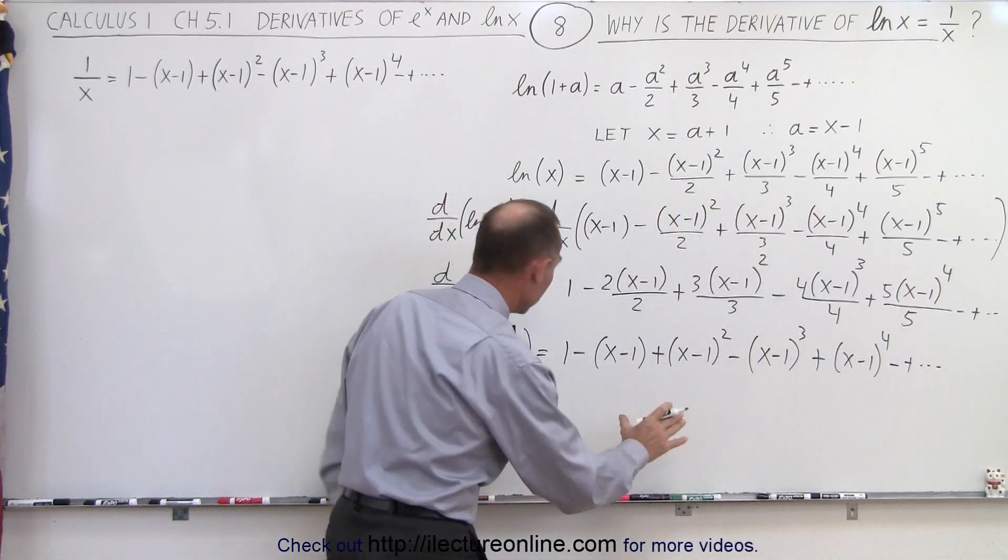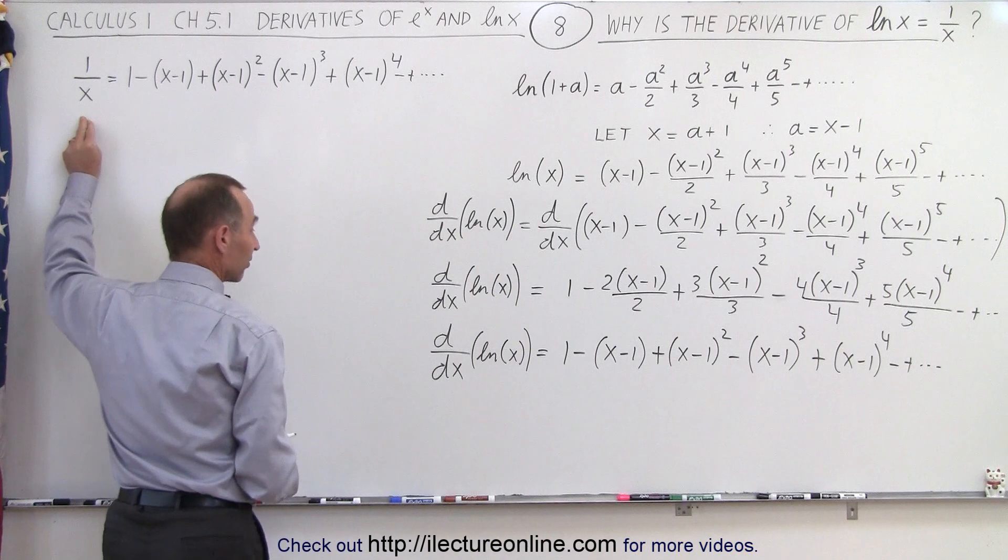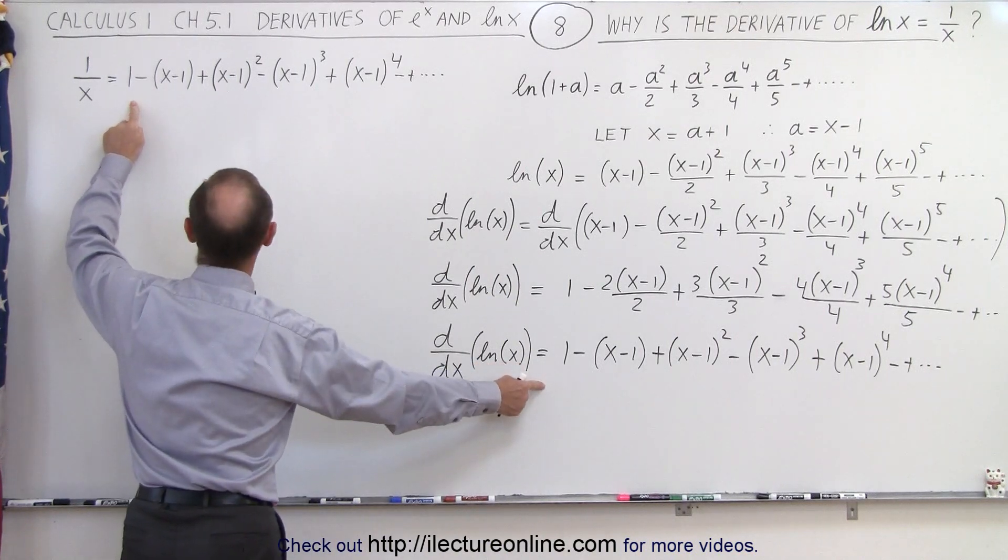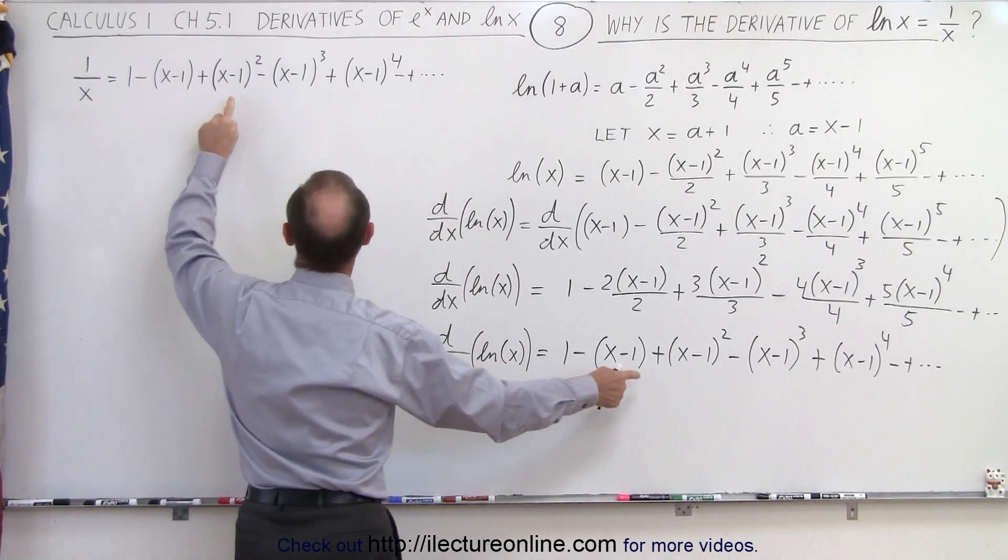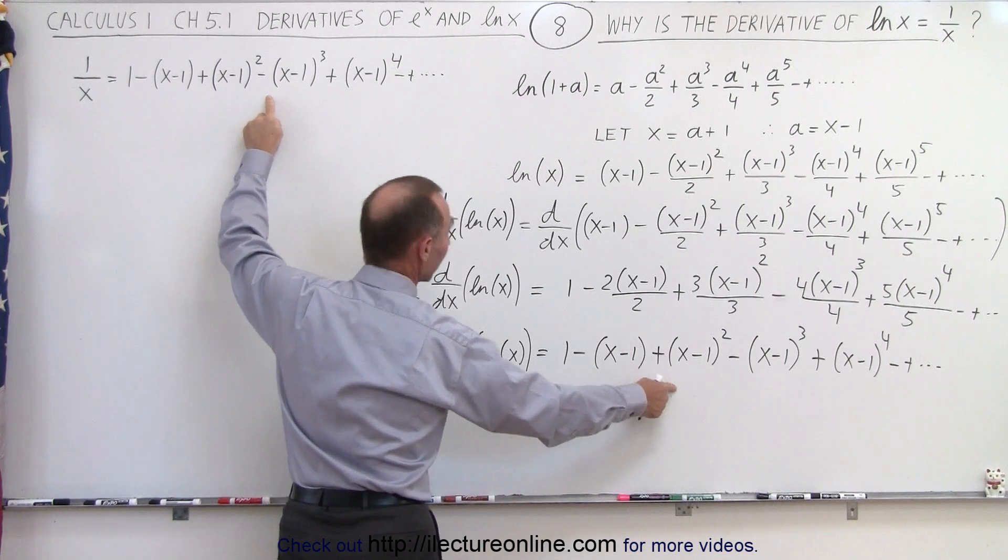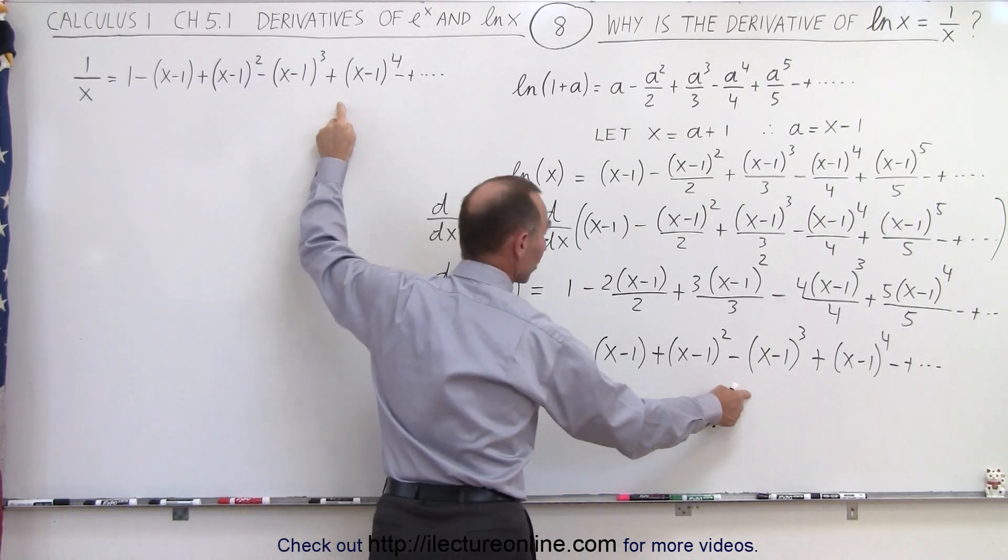And now, let's compare that to the infinite series we have for 1 over x. And take a look. We have 1 minus x minus 1, plus x minus 1 squared, minus x minus 1 cubed, plus x minus 1 to the 4th.